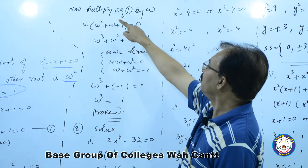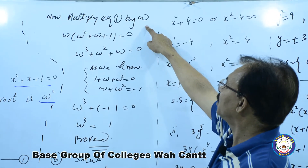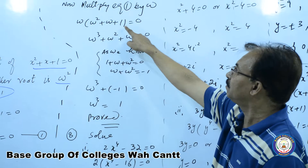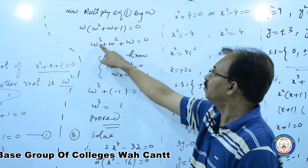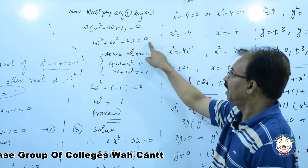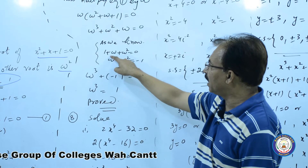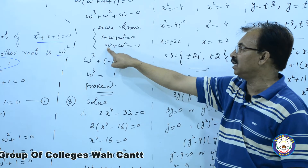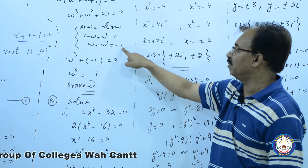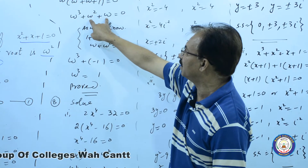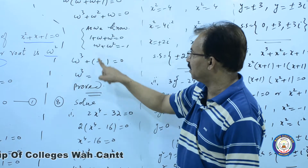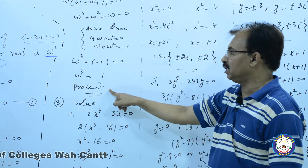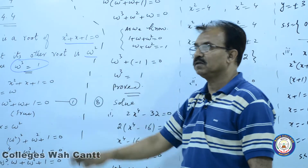ہم نے equation one کو omega سے multiply کیا۔ تو omega cube plus omega square plus omega بنا۔ as we know one plus omega plus omega square is equal to zero، تو omega square plus omega کی value minus one ہے۔ یہ value میں نے یہاں place کر دی، تو omega cube plus minus one، negative one positive ہو جائے گا، تو omega cube is equal to one۔ یہ بات بھی prove ہو گئی۔